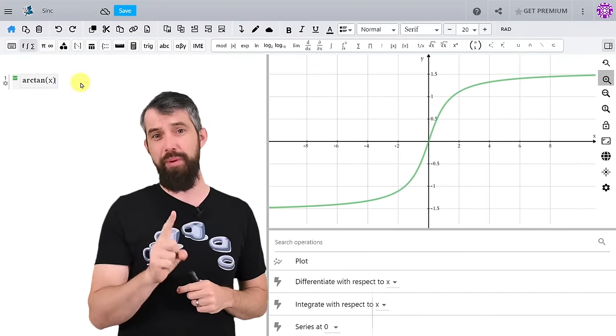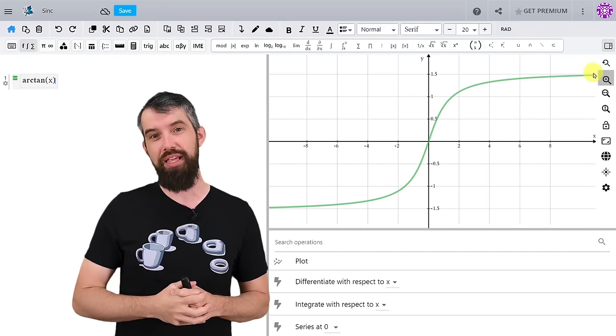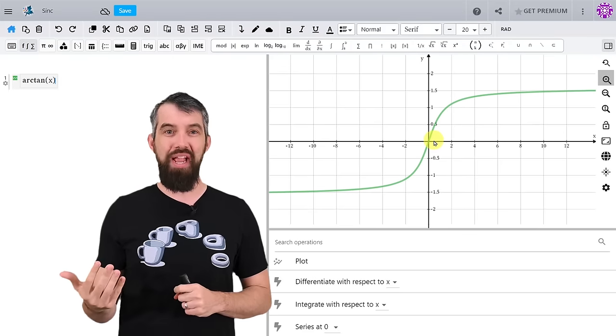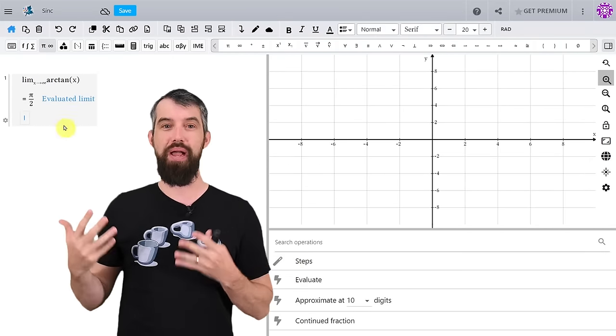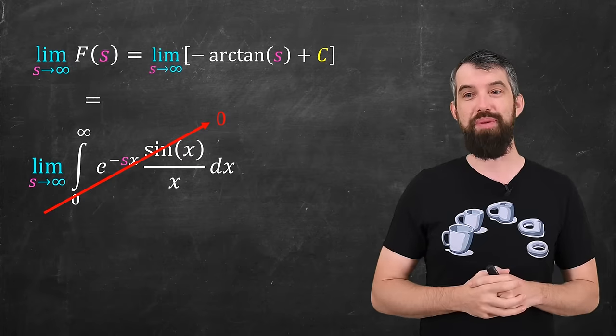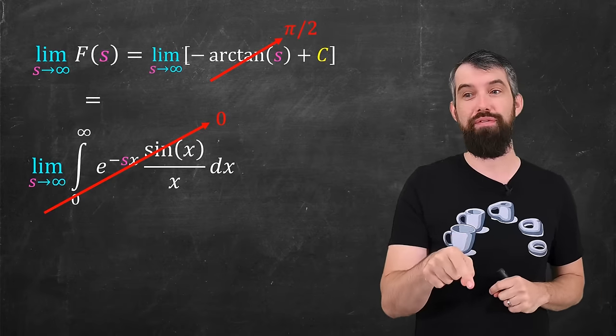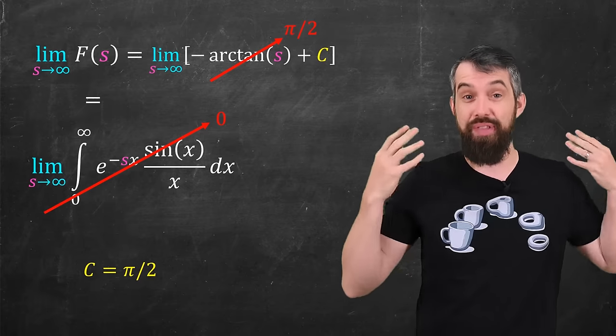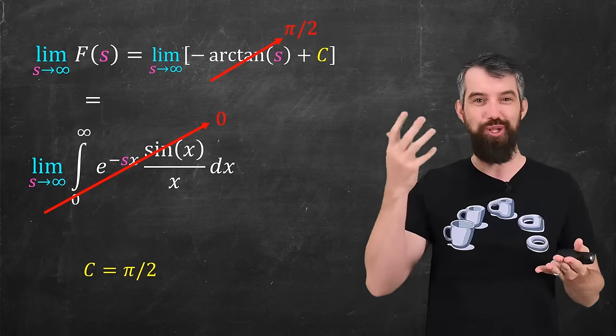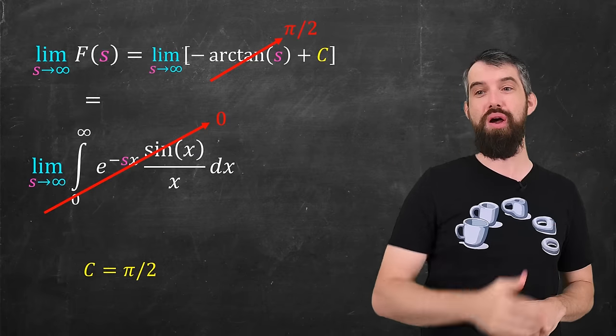The other thing that was going to be relevant for me was arctan. Let's just quickly plot what arctan looks like. And you'll notice that off to the right, it has a horizontal asymptote of pi divided by two. So going back to our computation, the limit of the arctan of s as s goes to infinity, that's just going to be pi over two. So putting all that together, I'm just getting the value that c is pi over two, since negative pi over two plus pi over two is equal to zero. So we solved for that constant.